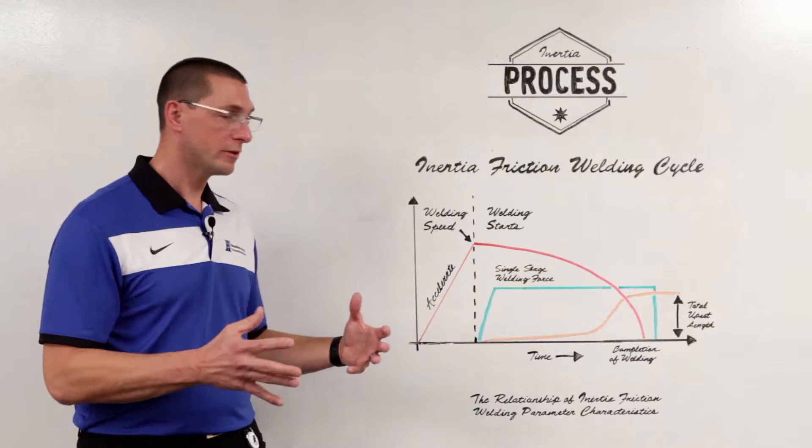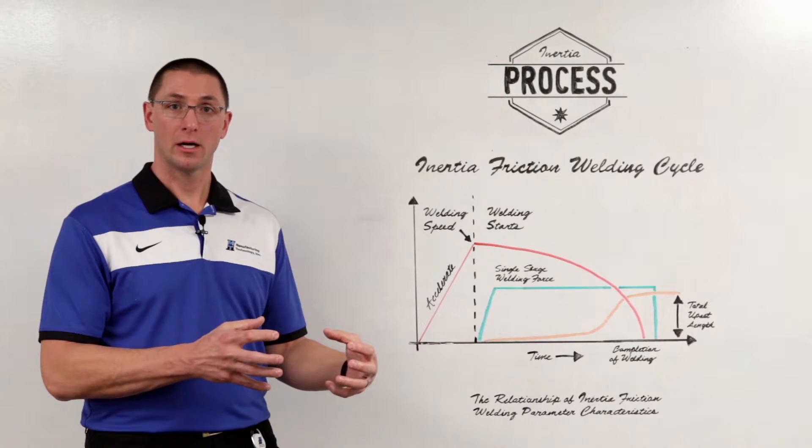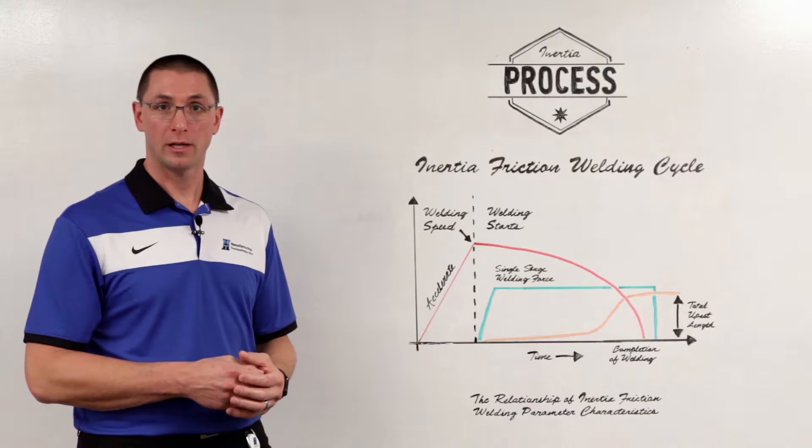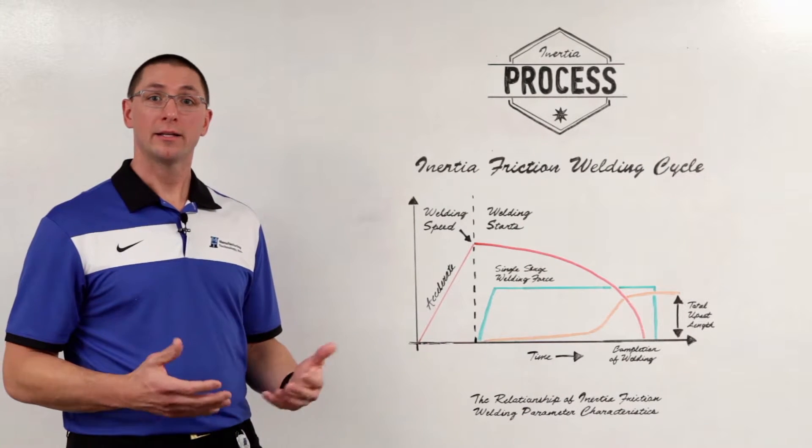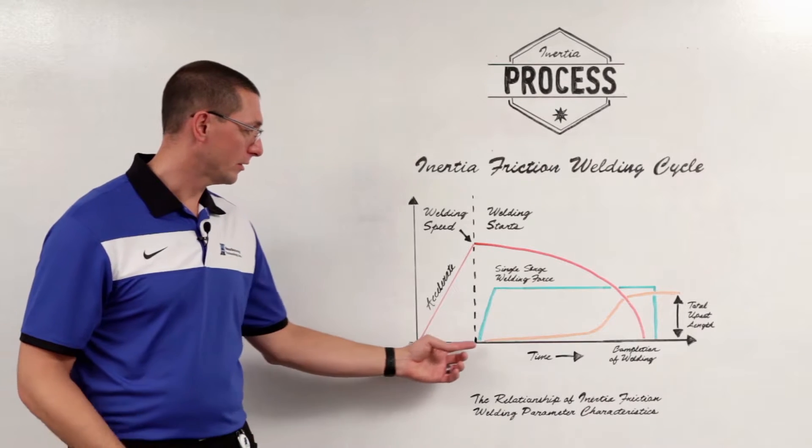As a result of the forge force and the rotating components, we create heat at the weld line because of the friction. This heat softens the material, gets it to the point where we can extrude the material.